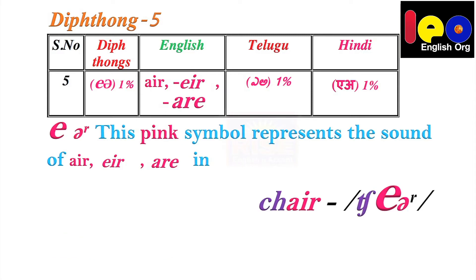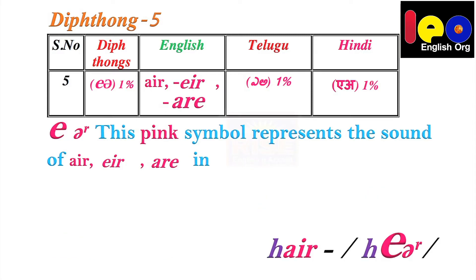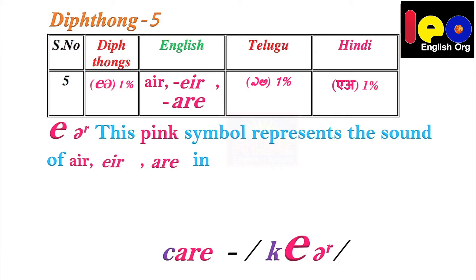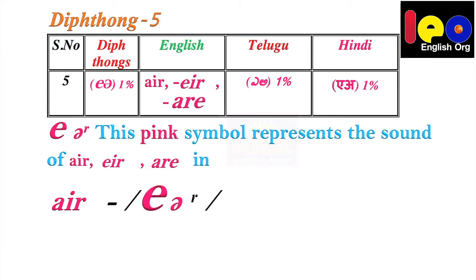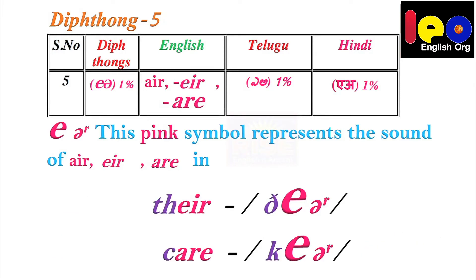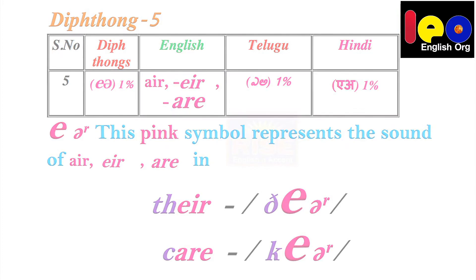Don't say 'hair', say 'heə'. Don't say 'there', say 'ðeə'. Don't say 'care', say 'keə'. So: air, fair, chair, hair, there, and care.